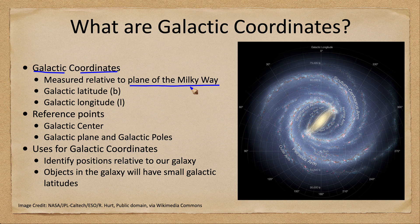Here we're using the galaxy itself. That means we can measure a galactic latitude given by the lowercase letter b, and a galactic longitude given by the lowercase letter l. That would tell you how far you are above or below the galactic plane — that would be the latitude — and the galactic longitude would tell you how far you are around the sky.